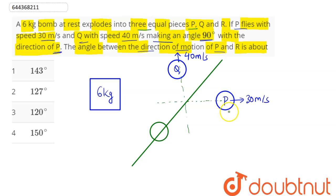So mass of P here is 2 kg, mass of Q here is also 2 kg. Hence, mass of this particle R will also be 2 kg. We just need to find the direction. The direction which R makes with P, hence this angle is required.